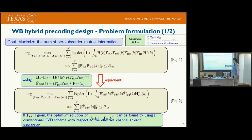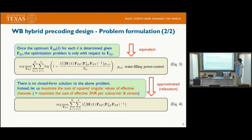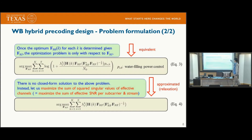If the analog pre-coder FRF is given, the optimum solution of the baseband pre-coder can be found using a conventional SVD scheme — the singular value decomposition scheme — with respect to these effective channel matrices. Once the optimal baseband pre-coder for each subcarrier is determined given the analog pre-coder, the optimization problem reduces to one with respect to only the analog pre-coder, as in equation three.